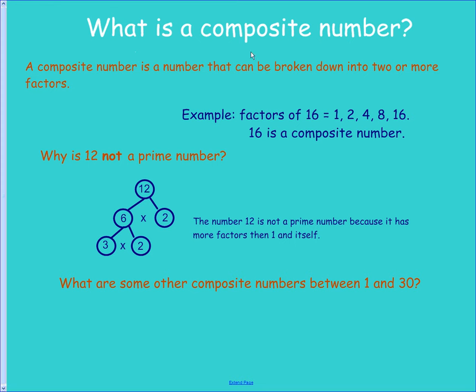So then what's a composite number? Composite numbers are the opposite. A composite number can be broken down into two or more factors. So our example, 16. The factors of 16 are 1 and 16, 2 and 8, 4 and 4. Therefore, there's more than one factor of 16, so 16 is composite.